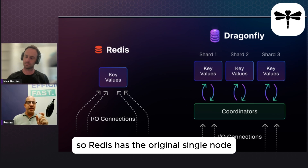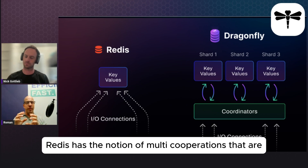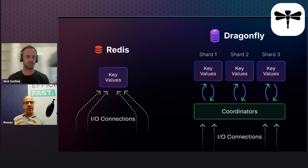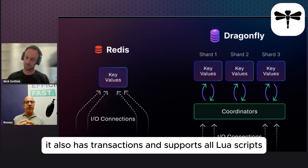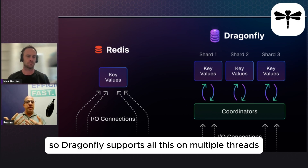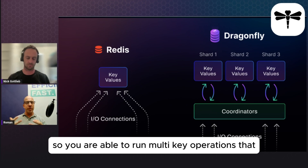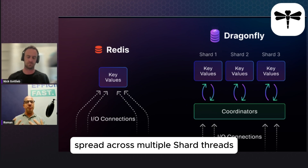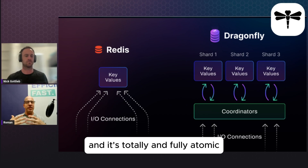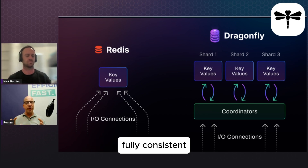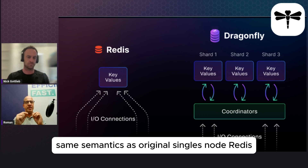Redis has the original single node notion of multi-key operations that are strongly consistent and atomic. It also has transactions and supports all Lua scripts. Dragonfly supports all this on multiple threads, so you are able to run multi-key operations that spread across multiple shard threads, and it's totally fully atomic, fully consistent — same semantics as the original single-node Redis.